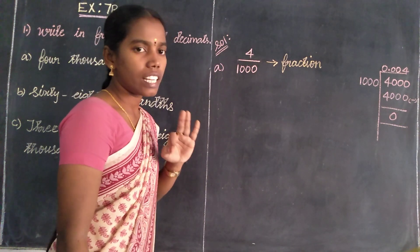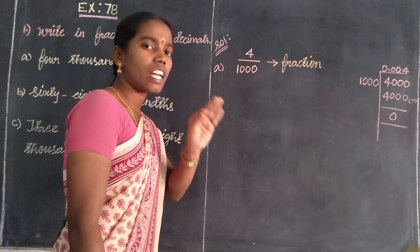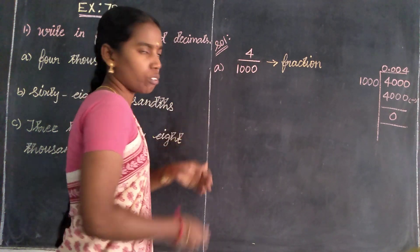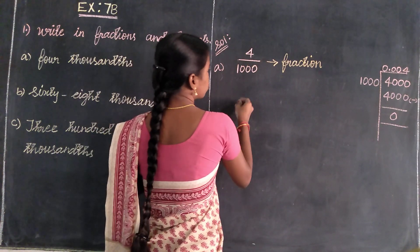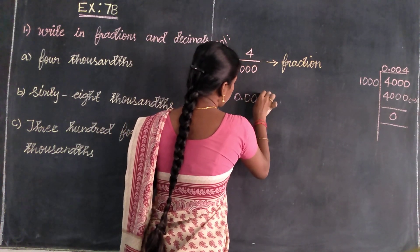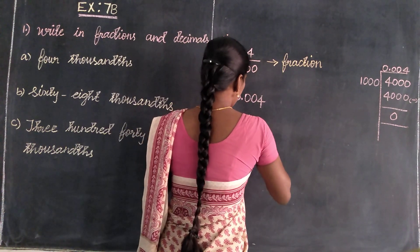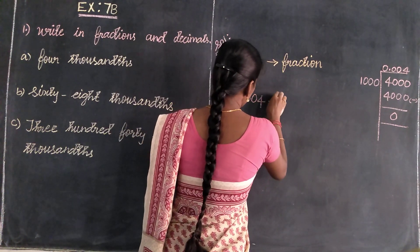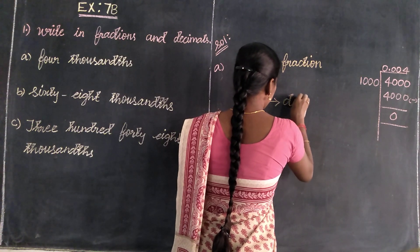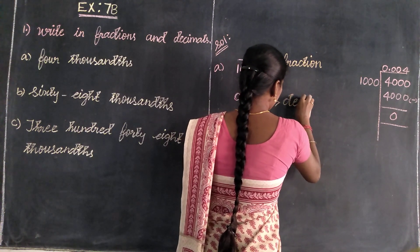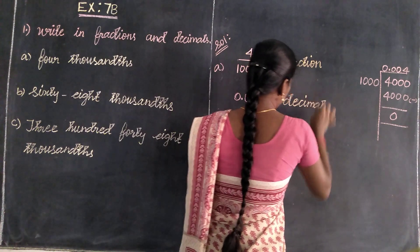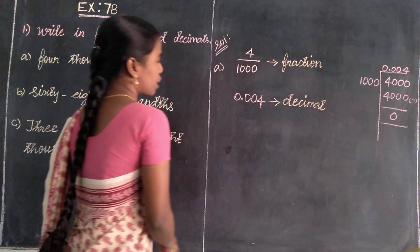So, in this value, to change into decimals: 4 divided by 1,000 is the fraction number. The decimal answer is 0.004 — pointed after three decimal places, because thousands are mentioned. The decimal number is 0.004. That is the first one.